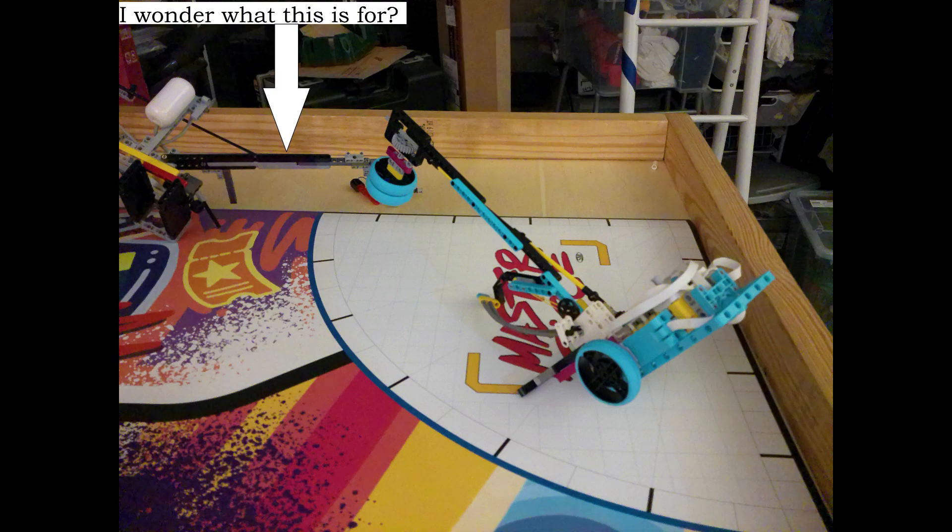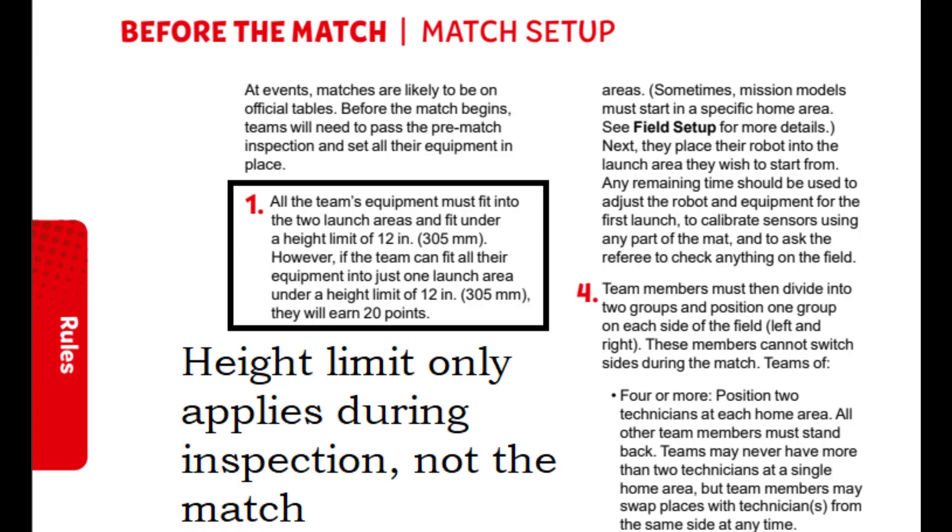But more importantly, I didn't realize that there was no height limit during the match. I mistakenly assumed that the height limit that applies to the inspection area this year also applies to the match. So I later read that there was no height limit when actually running the robot, and so I have this completely unnecessary get-up mechanism.